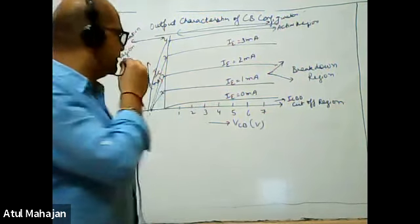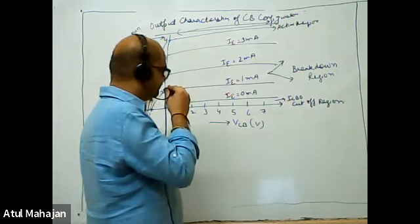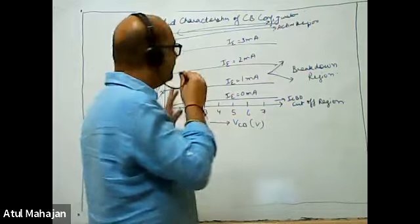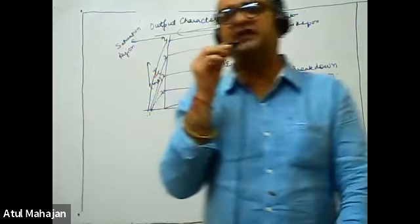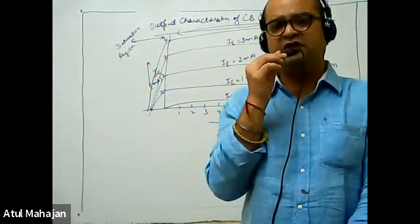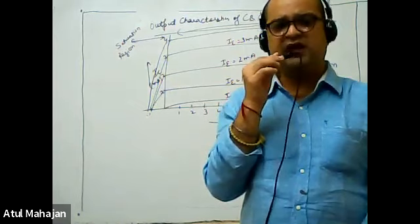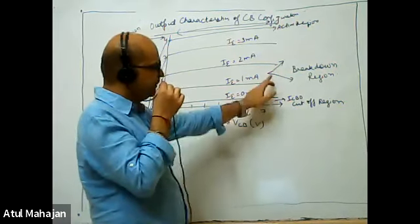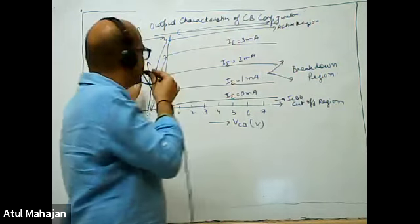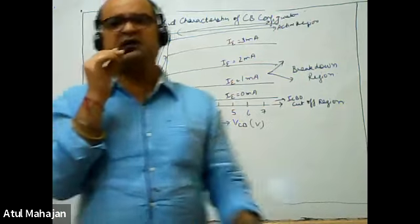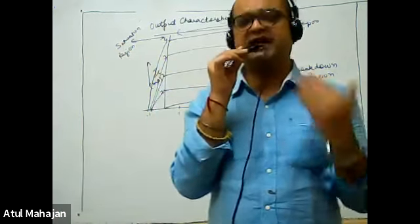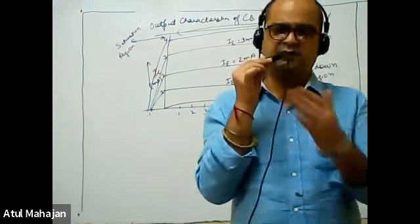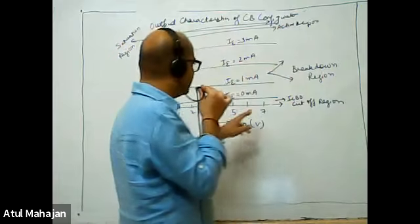The readings give us the characteristics between the output voltage VCB and output current IC. Now, we have all discussed the four regions that occur in case of transistors: the cutoff region, breakdown region, active region, and saturation region. We'll be studying about all of these in this topic. Let's start with the cutoff region.